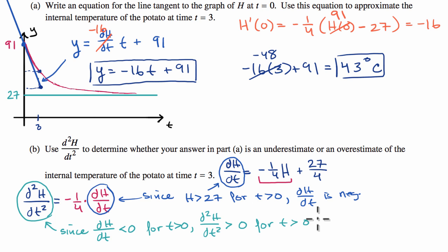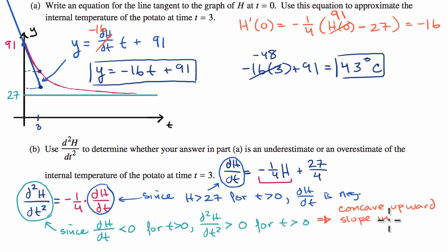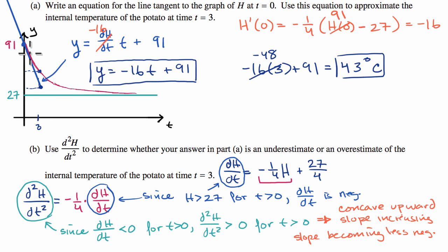So what does that mean? If the second derivative is positive, that means we are concave upward, which means the slope is increasing — or becoming less negative. If the slope is becoming less and less negative, then when we approximated our temperature at T equals three we used a really negative slope, when in reality our slope is getting less and less negative. So we would have over-decreased our temperature from T equals zero to T equals three, meaning we would have underestimated it.